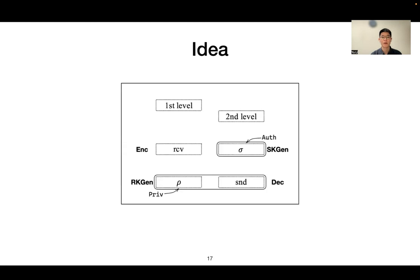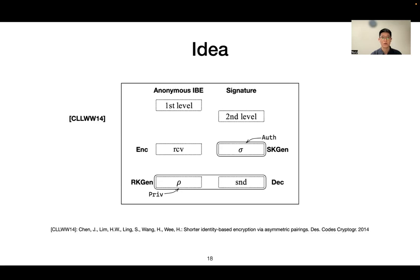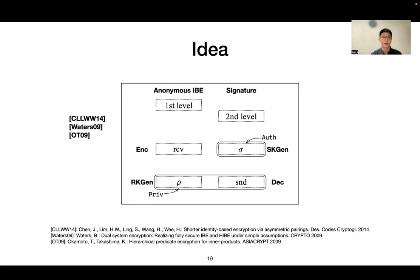We present a two-level identity-based construction to satisfy the same functionality of IBME. This two-level construction with anonymity and delegation consists of anonymous identity-based encryption and signature. We choose strongly-anonymous IBE as our baseline, which is based on Okamoto and Takashima's dual pairing vector spaces. This two-level AIB covers the two security requirements of IBME respectively, and both security reductions rely on Waters' dual system encryption.